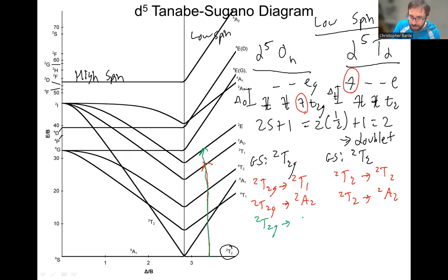Doublet T2G is still our ground state for octahedral, but we're going to now doublet EG. Just got that from here. Here were our two red ones with the same energy. And here we just dropped the Gs for the tetrahedral case.